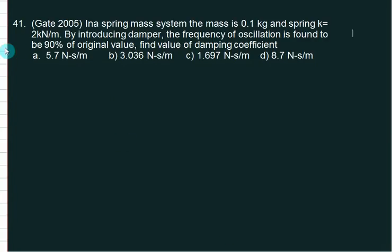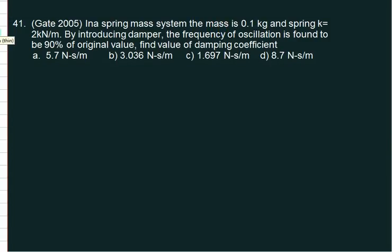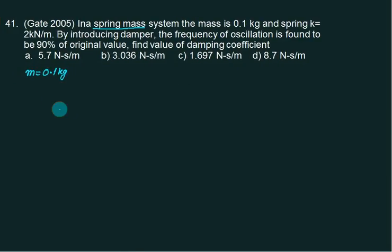In a spring mass system, mass is 0.1 kg and spring K equal to 2 kN meter. If the spring mass system is an undamped system, mass equals to 0.1. So spring constant is 2 kg. 2 kg is 2,000. By introducing the damper, the frequency of oscillation is found to be 90% of original value. So whether you want to say omega D is equal to 0.9 of omega N. What was the original frequency? Omega N. Now how much it is? Is it 0.9 of original value? What is the original value? Is it undamped? Yes.